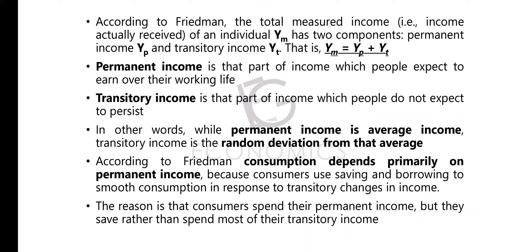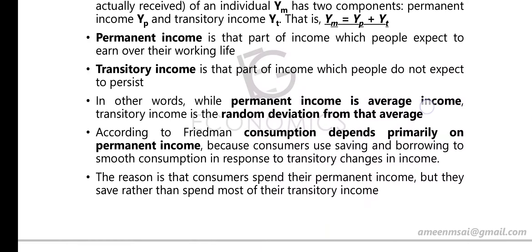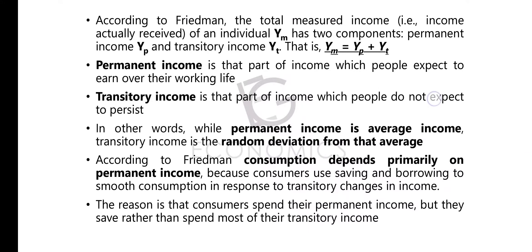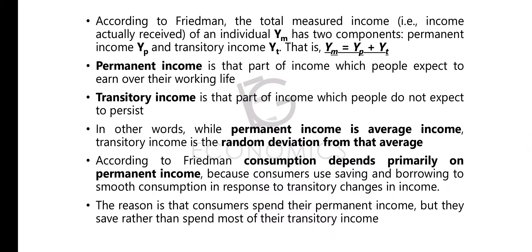Permanent income is the average income. Transitory income is the deviation that occurs from that average income. That is what we call transitory income.